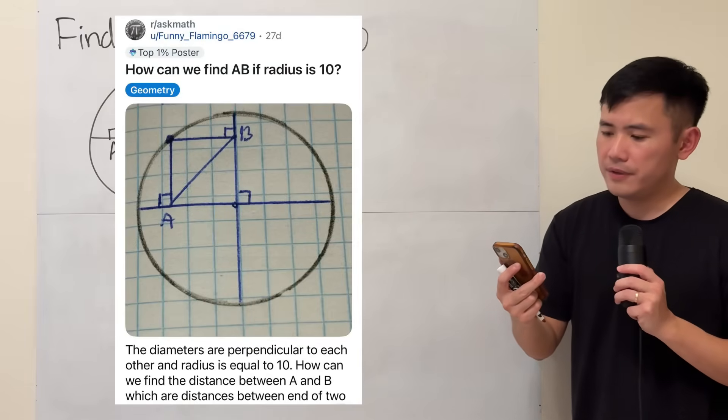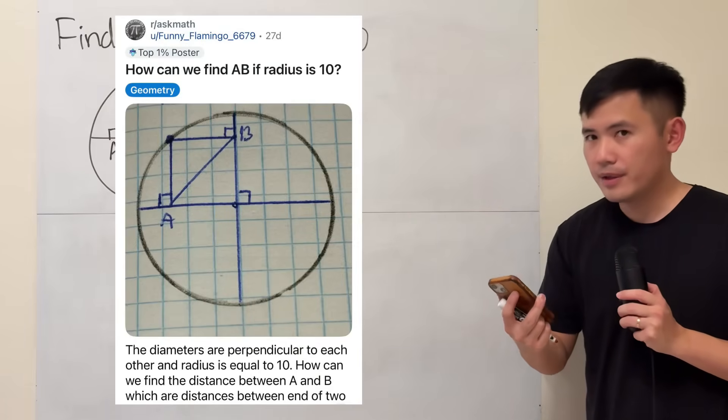How can we find AB if the radius is 10? Okay, let's have a look.